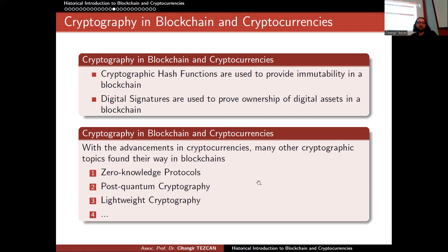With the advancement in cryptocurrencies, many other cryptographic topics have found their way into blockchains, like zero-knowledge protocols. These are extensively used in some cryptocurrencies that try to provide full anonymity. In those blockchains, they also hide which accounts hold what amount of money and to which accounts — you cannot even see it when you look at them.